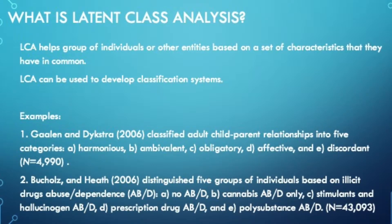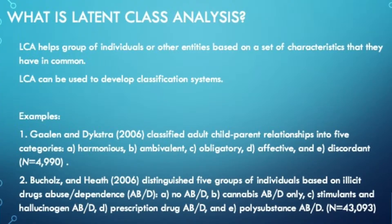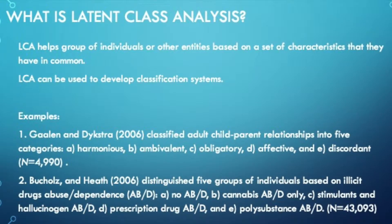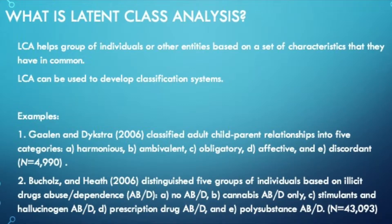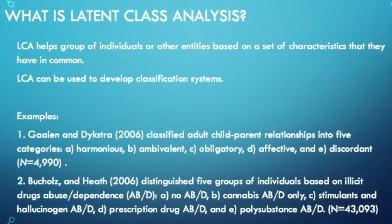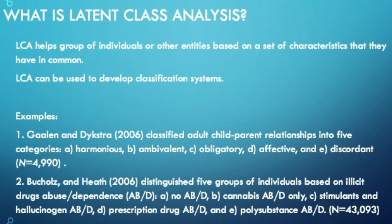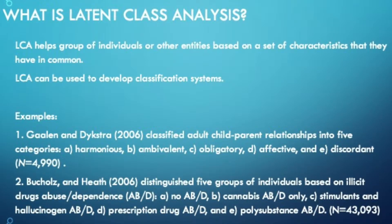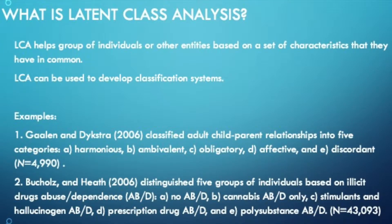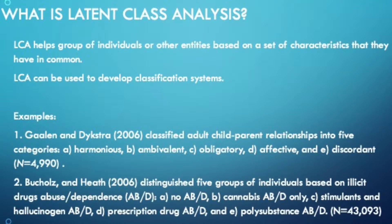Another example is a study that used data from 43,000 individuals to differentiate groups based on the degree of illicit drugs abuse or dependence. LCA helped distinguish five classes: no abuse or dependence at all, cannabis abuse or dependence only, stimulants and hallucinogen abuse or dependence, prescription drug abuse or dependence, and polysubstance abuse or dependence.